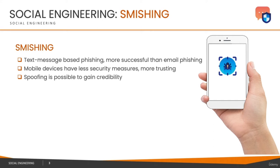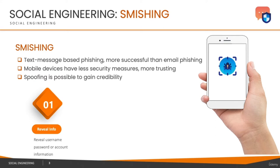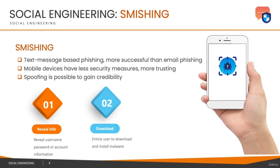The main objectives of smishing attacks include: getting your usernames, passwords, or account information which attackers can use to extract information or get financial benefits. It could also be that a smishing message entices you to download or install an application that appears very useful — for example, it may appear to be from your bank asking you to install a new version of their banking application. That application could be malicious.